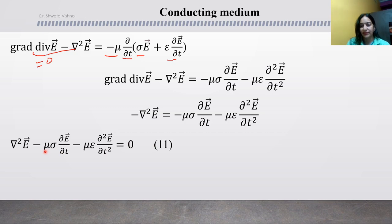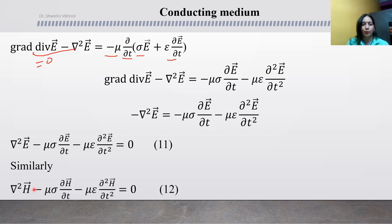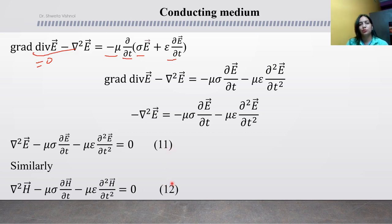Just as we derived equation 11 from equation 7, we similarly process equation 8 to get: del squared H minus mu sigma del H over del t minus mu epsilon del squared H over del t squared equal to 0 — equation 12. Equations 11 and 12 are the wave equations for the electric and magnetic field vectors in a conducting medium.